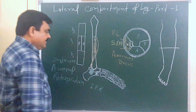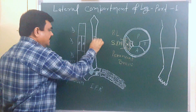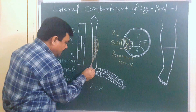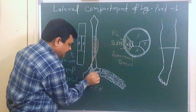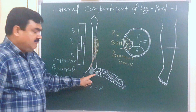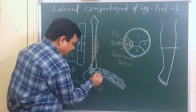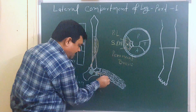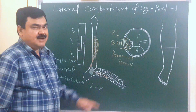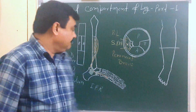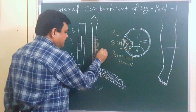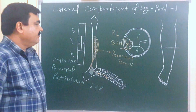Peroneus brevis passes behind the lateral malleolus, then deep to the superior peroneal retinaculum, and into the upper compartment of the space deep to the inferior peroneal retinaculum. After passing through this space, it is inserted onto the dorsal surface of the base of the fifth metatarsal.